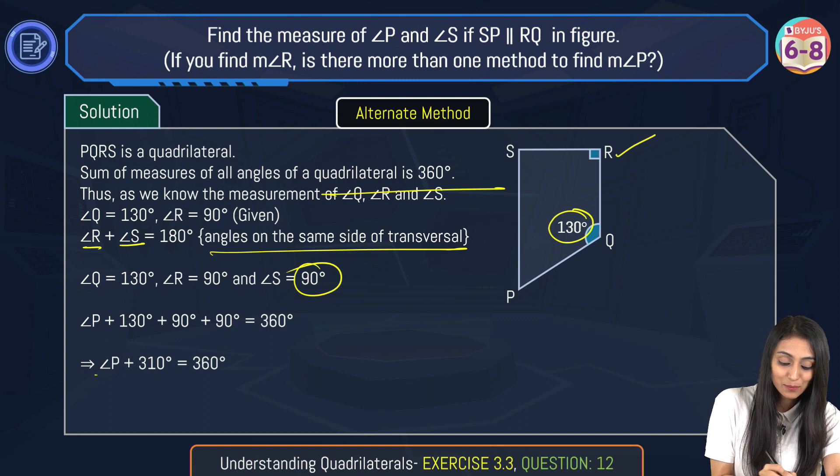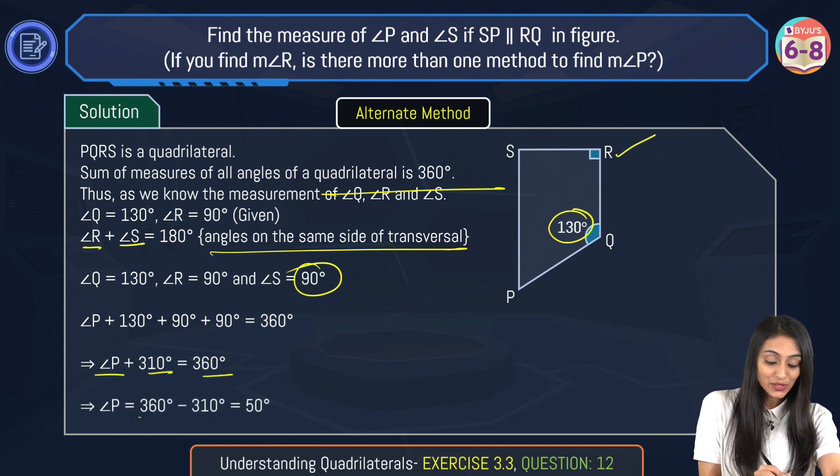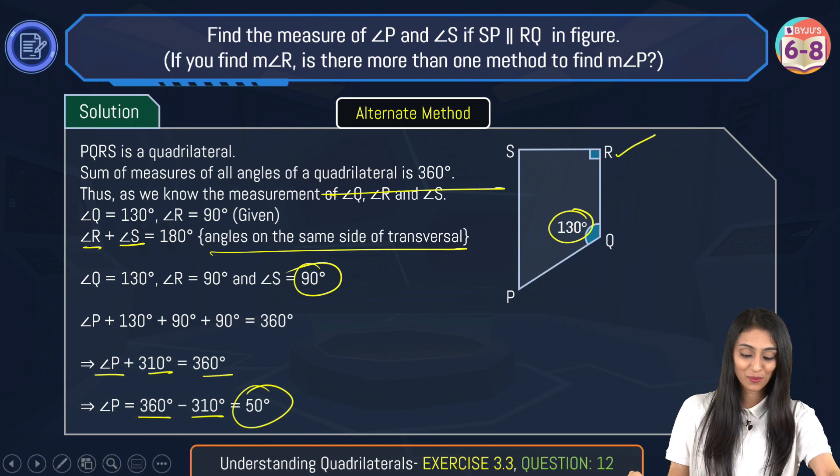From here we can say that angle P plus 310 degrees equals 360 degrees, which is going to be 360 degrees minus 310 degrees, that's 50 degrees. So this is another way to find out the measure of angle P.